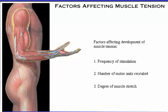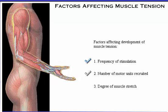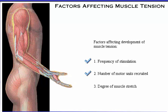We have now explored how the development of muscle tension is affected by both the frequency of stimulation and the recruitment of additional motor units. Next, we will examine the relationship between the degree of muscle stretch and the strength of contraction. This third factor is also called the length-tension relationship.